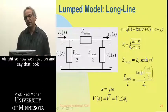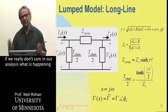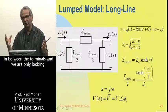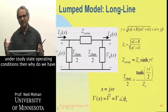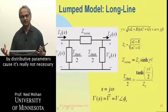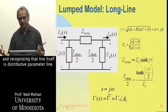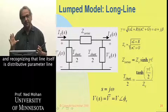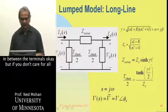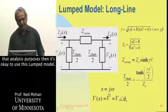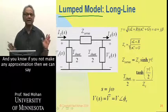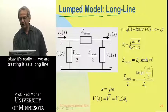All right. So now we move on and say that, look, if we really don't care in our analysis what is happening in between the terminals, and we are only looking at from the terminals under steady state operating conditions, then why do we have to model this line by distributed parameters? It's really not necessary. And recognizing that line itself is distributed parameter line, and the voltages are whatever they may be in between the terminals. But if we don't care for our analysis purposes, then it's okay to use this lumped model.